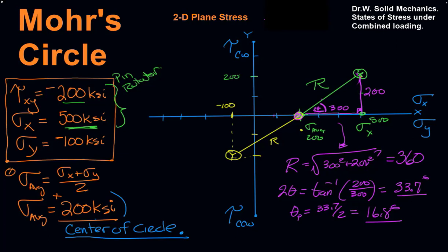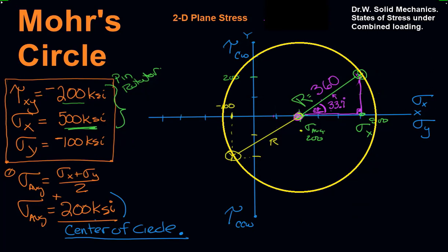The location of the rotator indicates the current state of stress from the original data set, and with that we've constructed Mohr's Circle. We can use it as a calculator: here we have an element with the current state of stress — 500 in one direction, 100 in another, and a shearing stress on all four faces. The question is what happens if we rotate this element inside the beam. We're not rotating the beam, just the element — and that computation can be done with Mohr's Circle.